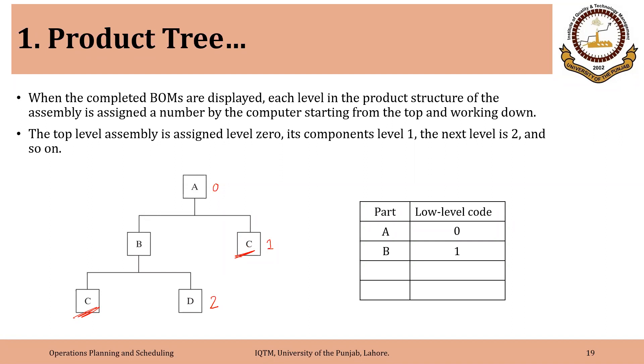So one thing that is very clear, that we cannot assign two codes to the same component. So we cannot say that C is also level 1 as well as level 2 component. Now conceptually it is, but we will assign it a single code. So as a rule, we assign the lowest level code, and lowest level code means the earliest this component will be used. So that is the basic point. The earliest this component will be used to be assembled with D to make B, and then it will be used at level 2.